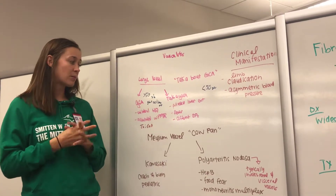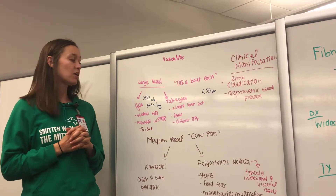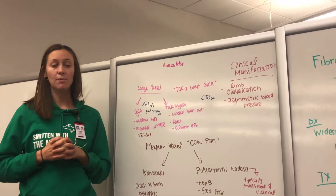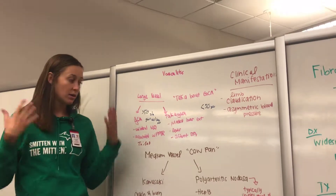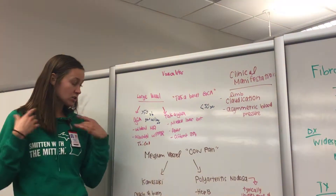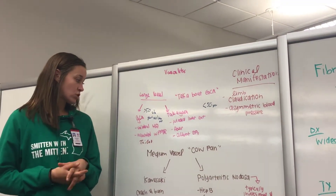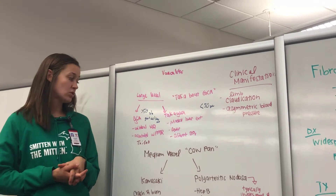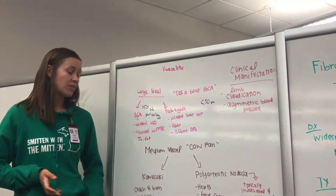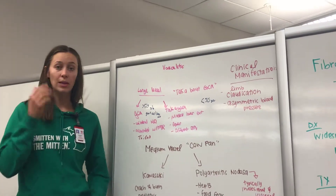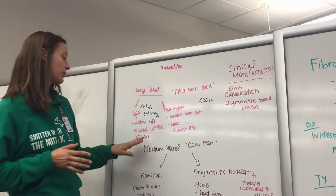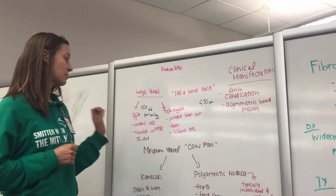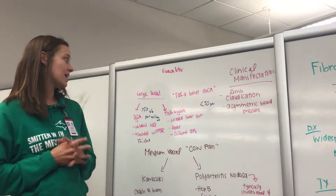GCA is associated with PMR, polymyalgia rheumatica, which is stiffness and pain of proximal muscle girdles — shoulder and hip girdles. If you do not treat this very quickly, it can be associated with blindness. You need to make sure to treat it quickly with prednisone. So that's GCA, also known as temporal arteritis.